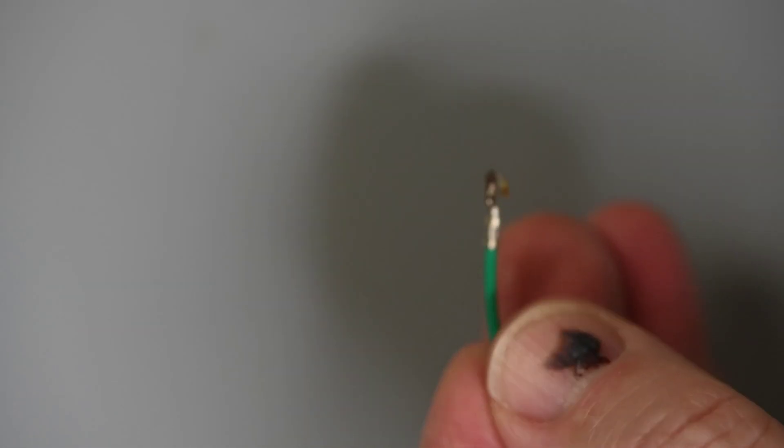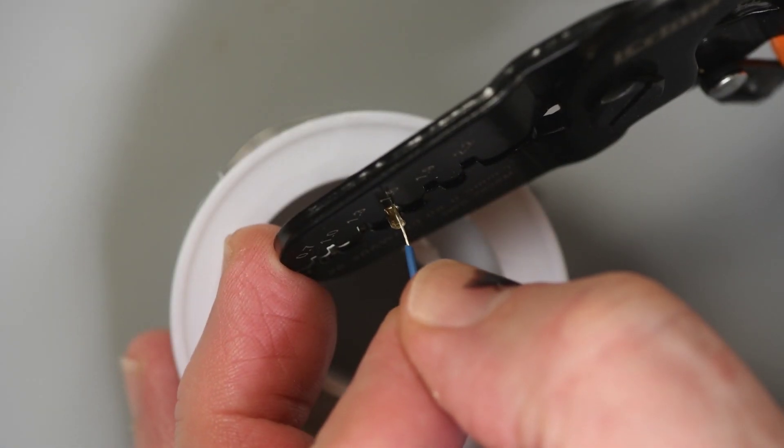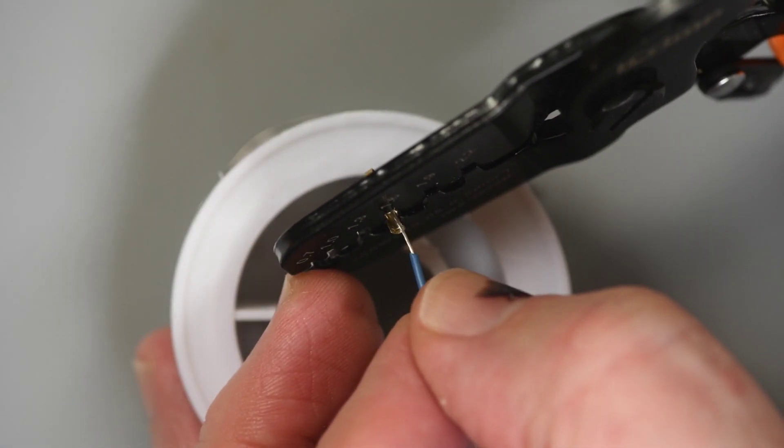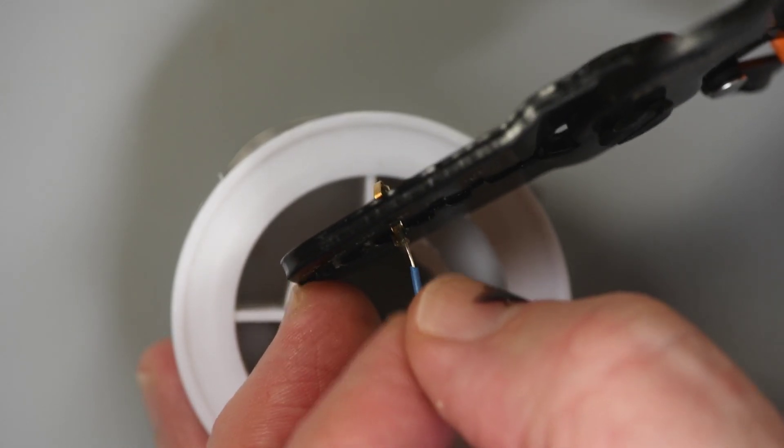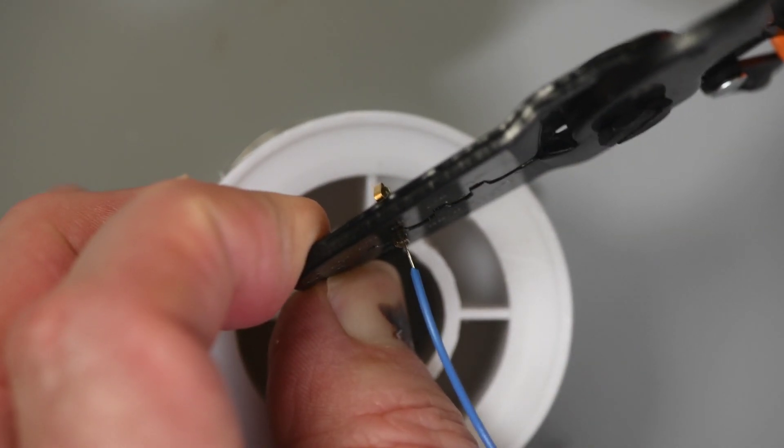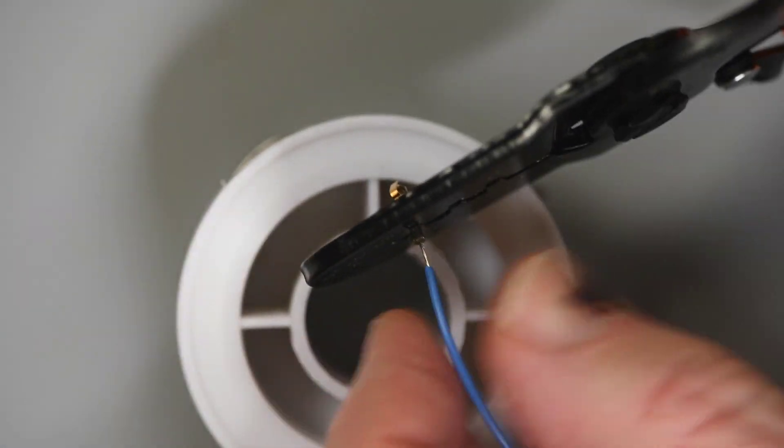This tool can make some good looking crimps on these terminals. But, and I think it is the rounded bottom of the terminals, the jaws will try to deflect. Very disappointing. Again, a very low rate of success. This is not the tool for these.